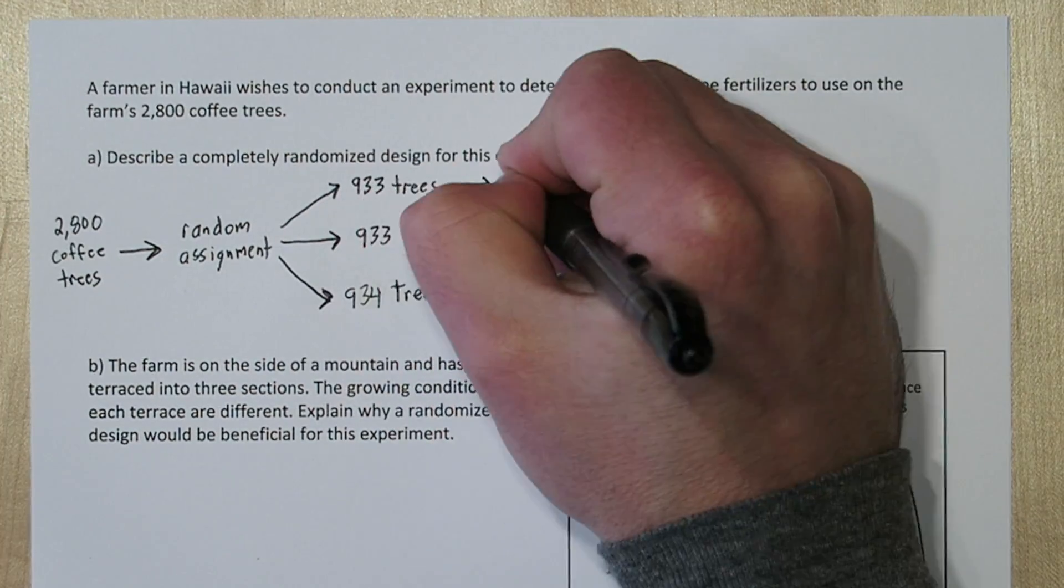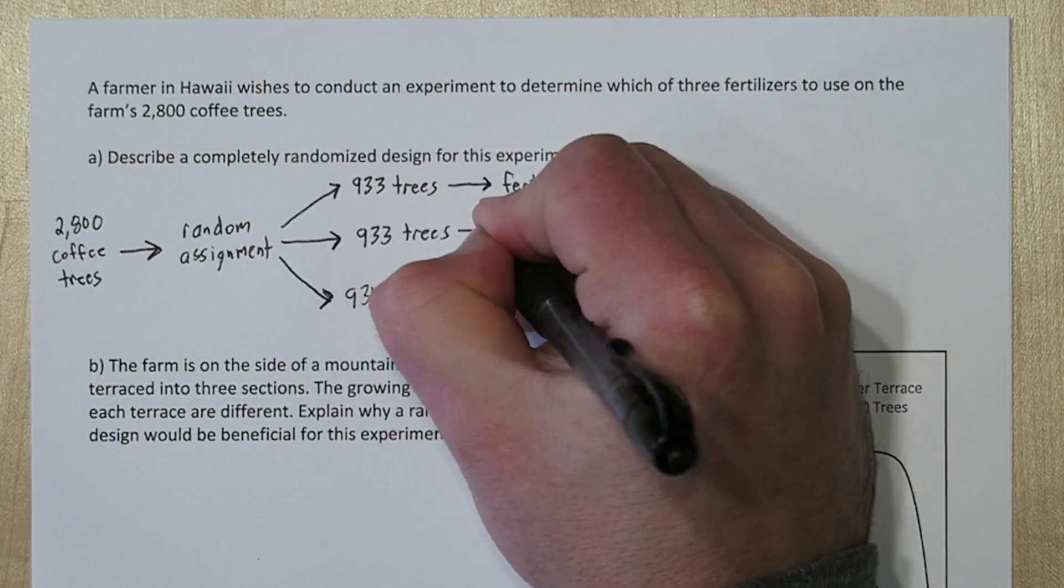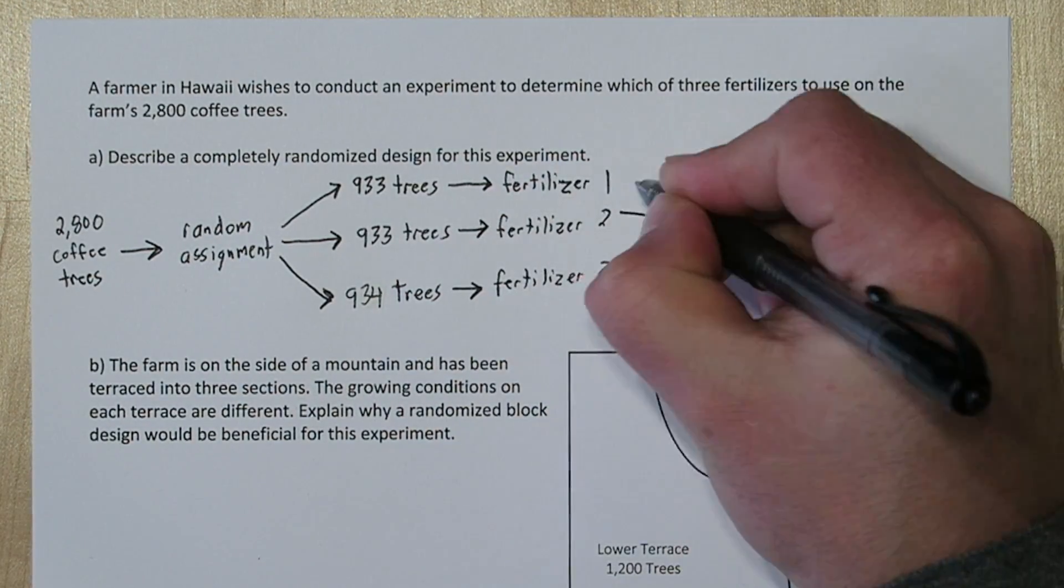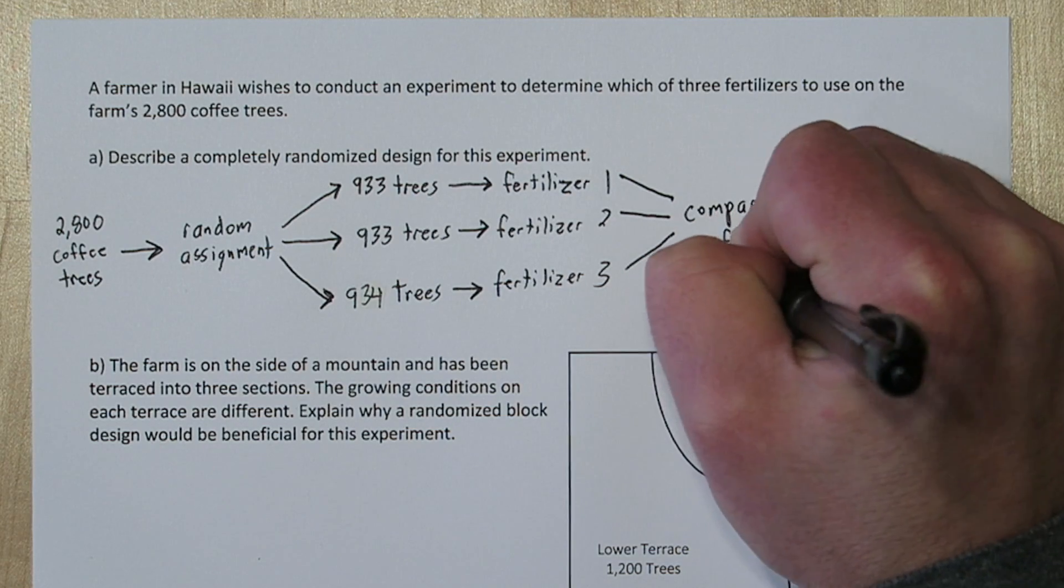We're going to give group 1 fertilizer 1, group 2 fertilizer 2, and group 3 fertilizer 3, and then after some time we're going to compare the three groups of coffee trees.